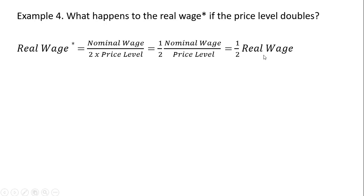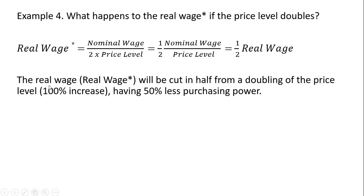So the real wage will be cut in half from a doubling of the price level. This doubling of the price level implies a 100% increase in the price level, so the purchasing power of the real wage will be cut in half.